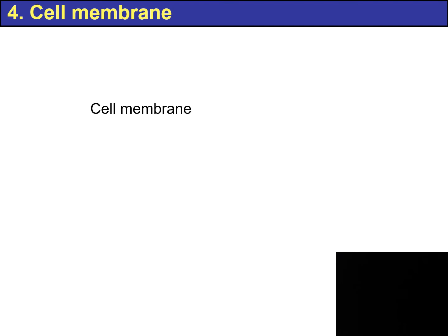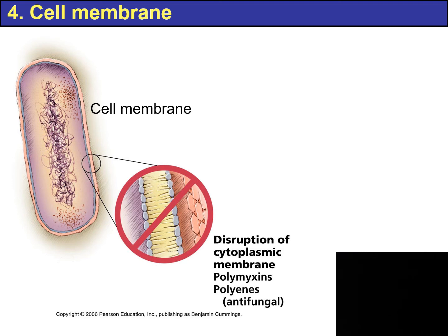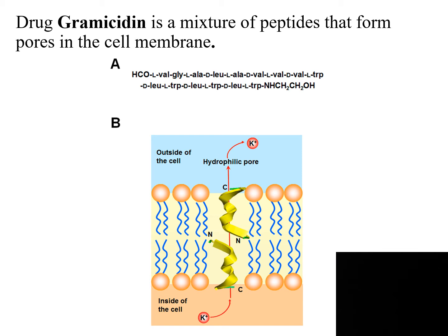The next type of inhibition we will talk about is when you affect the cell membrane. The first drug we will discuss is gramicidin, which is a mixture of peptides that will form a pore that penetrates the cell membrane. If you look at image B, the gramicidin is going to penetrate and create this hole in the phospholipid bilayer. Once you create this hole, then the cell can no longer restrict ions and water from moving.